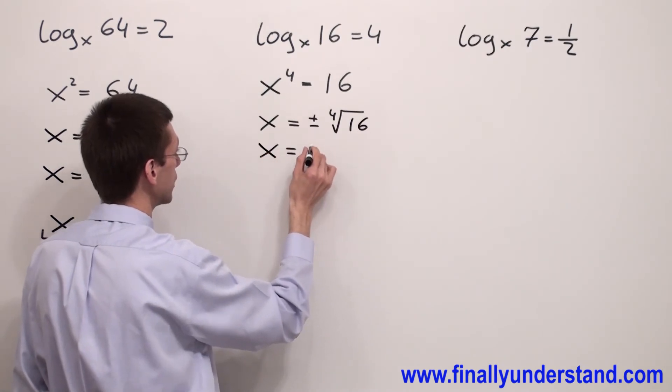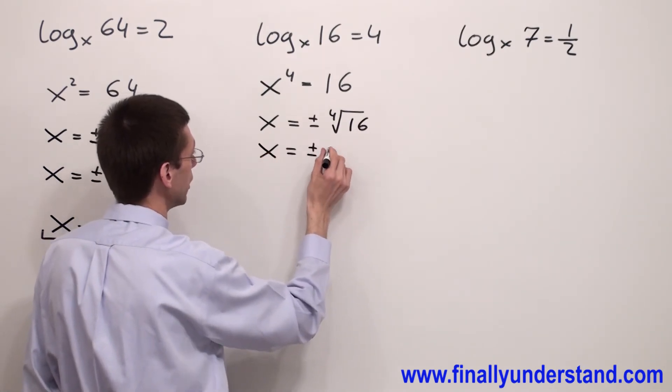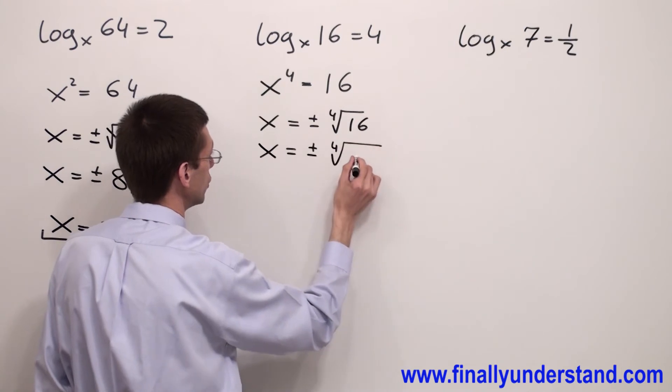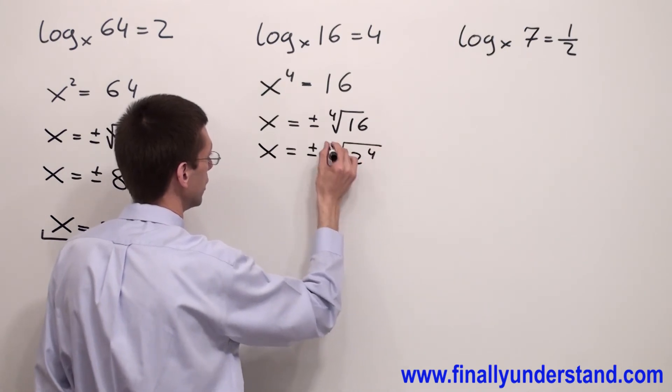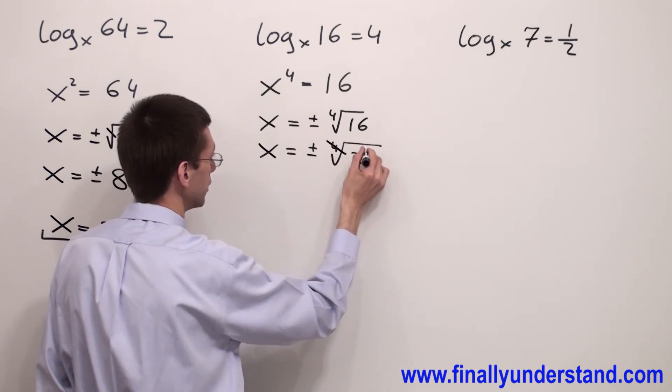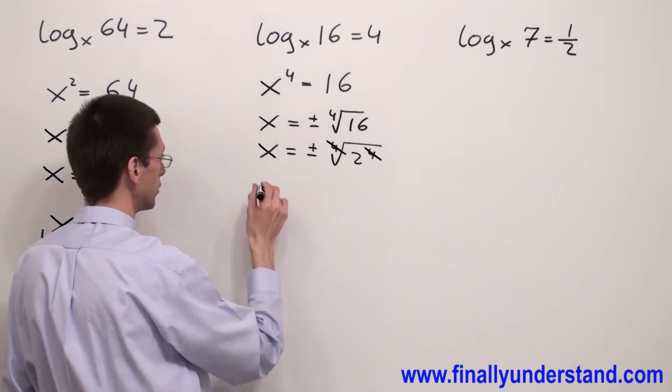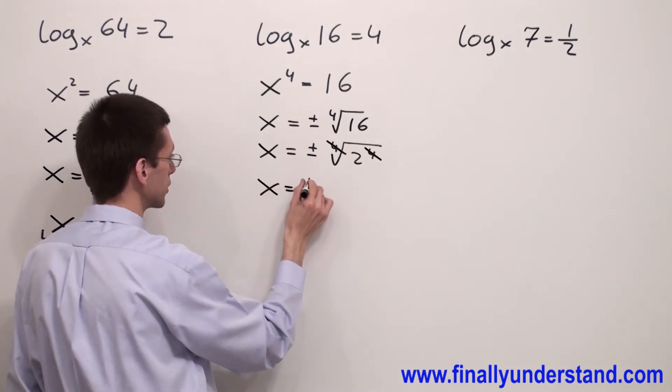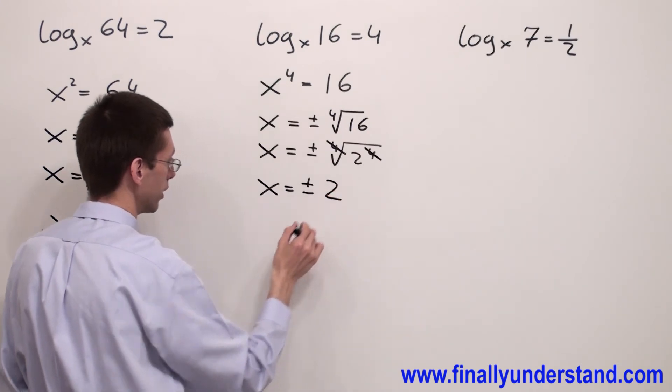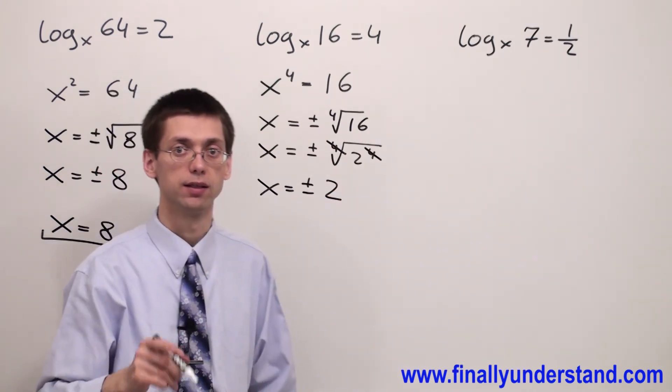This is equal to x equals plus or minus fourth root of 2 to the fourth power. Fourth root and 4 will cancel out and I have x equals plus or minus 2.